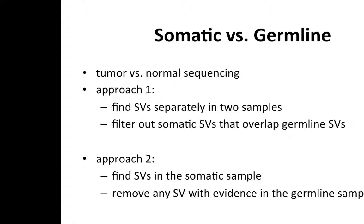When looking for rearrangements in cancer, there are two main approaches. Since you've typically sequenced both the tumor and the individual's normal genome, you're primarily interested in structural variation that occurred in the tumor rather than the inherited germline. You can either call structural variation independently in both samples and filter out events present in the normal, or call structural variation in the tumor and remove any with evidence of discordant read pairs in the germline. Most programs you'll download for structural variation calling in cancer jointly examine both tumor and normal samples simultaneously as a stronger way of filtering out germline events.